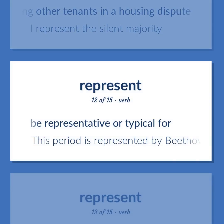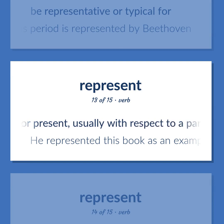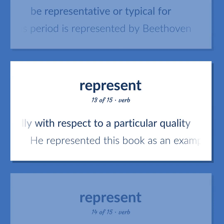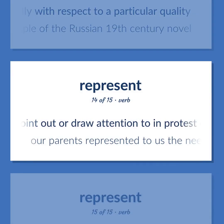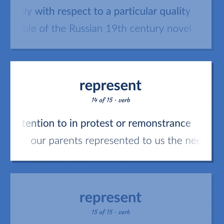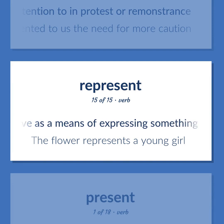Be representative or typical for. This period is represented by Beethoven. Describe or present, usually with respect to a particular quality. He represented this book as an example of the Russian 19th century novel. Point out or draw attention to, in protest or remonstrance. Our parents represented to us the need for more caution.